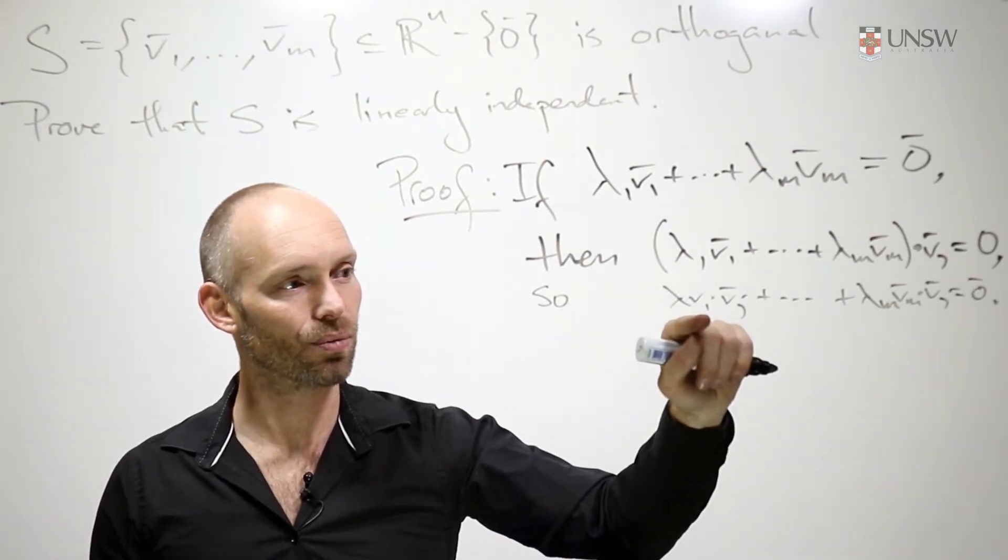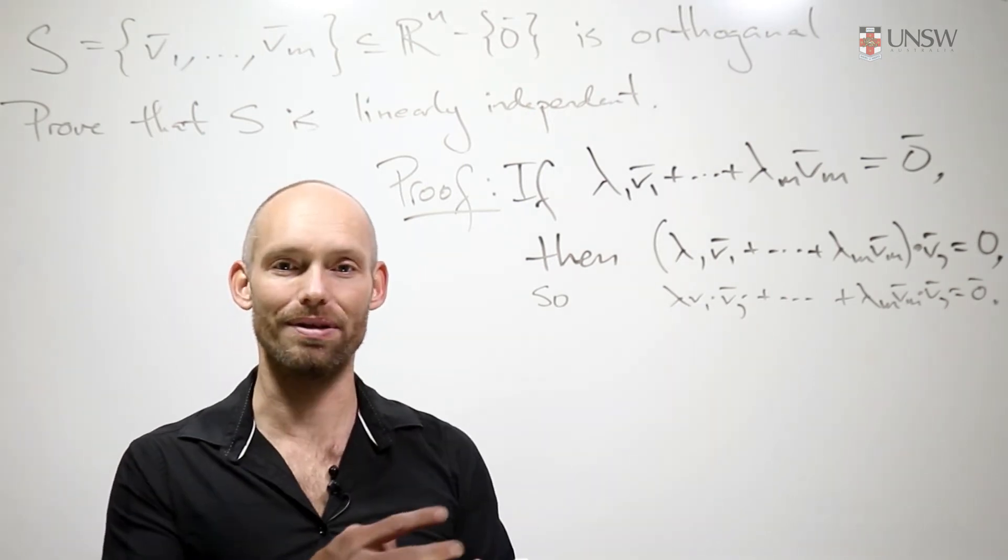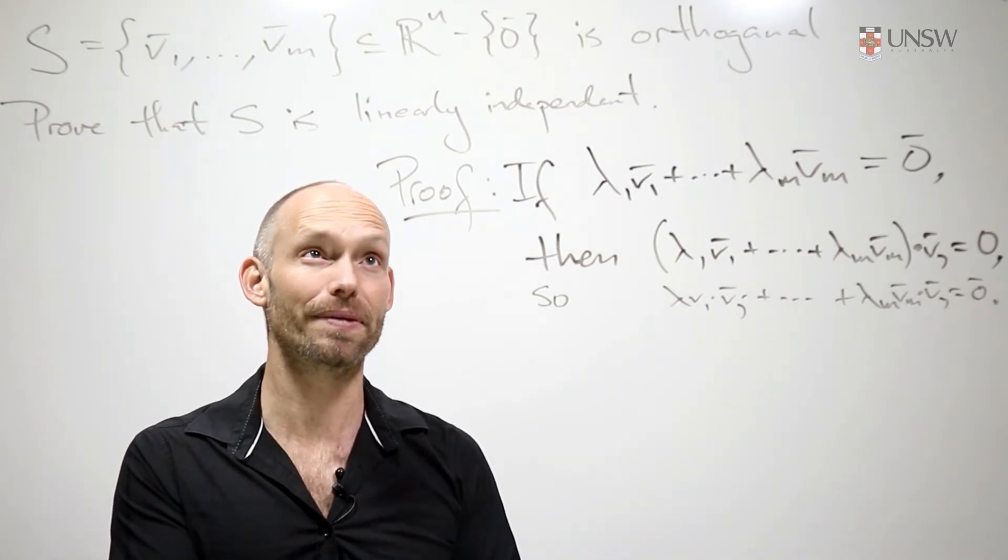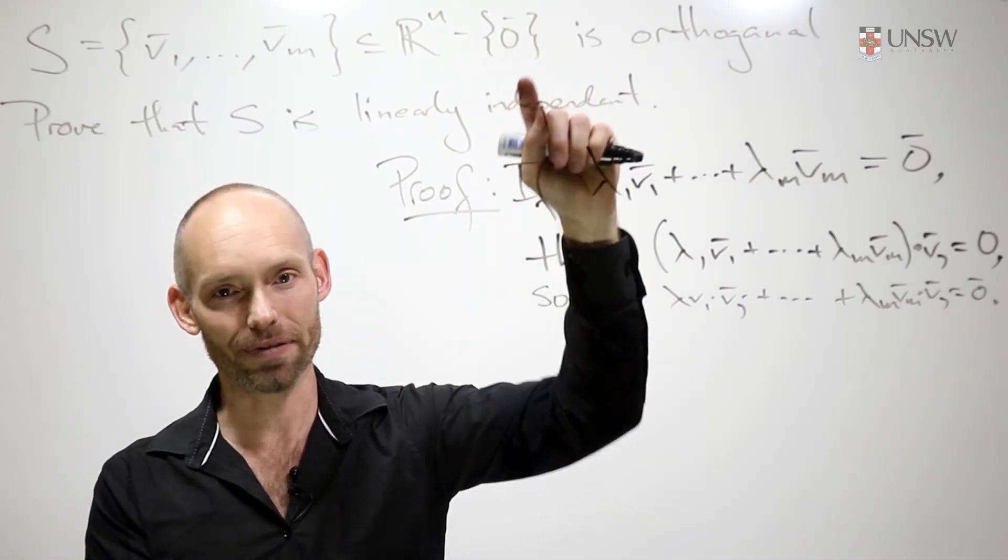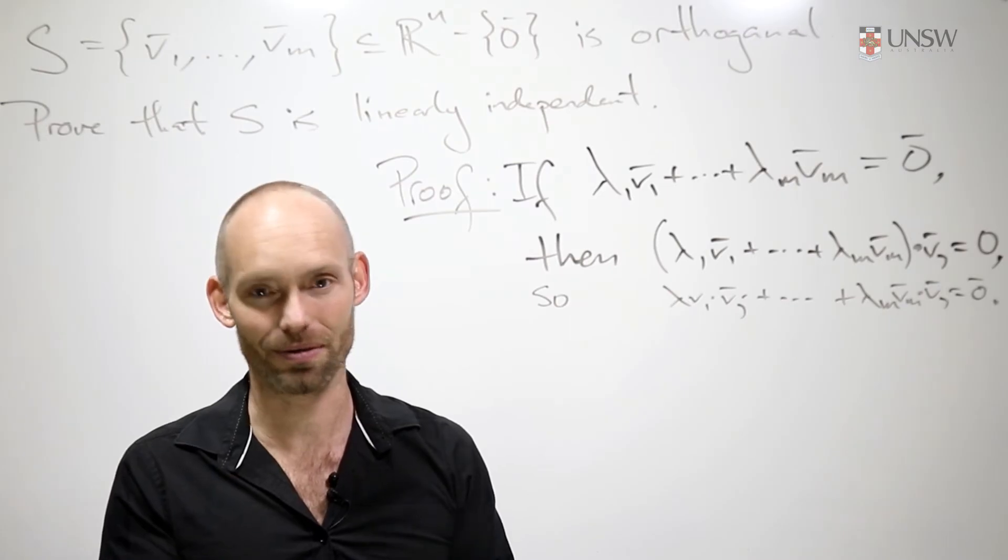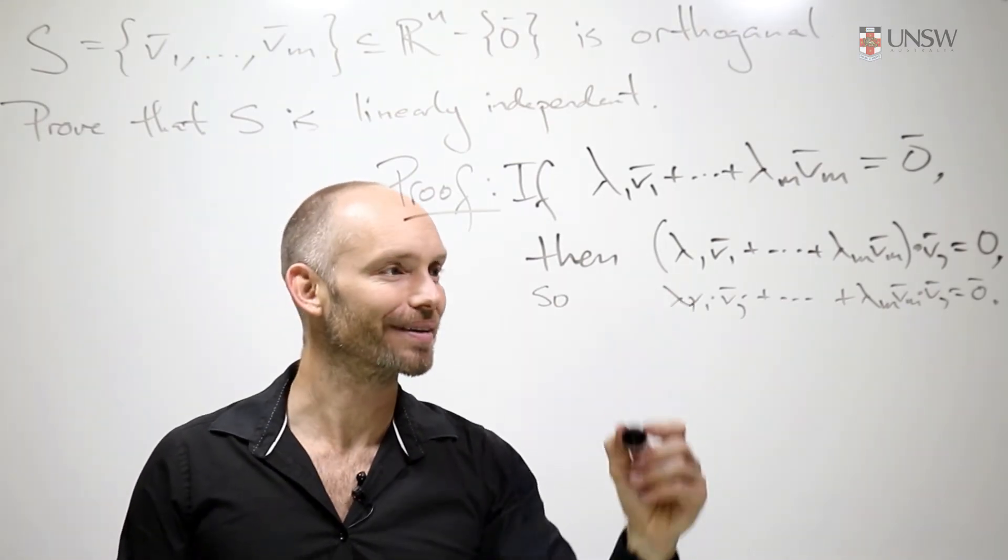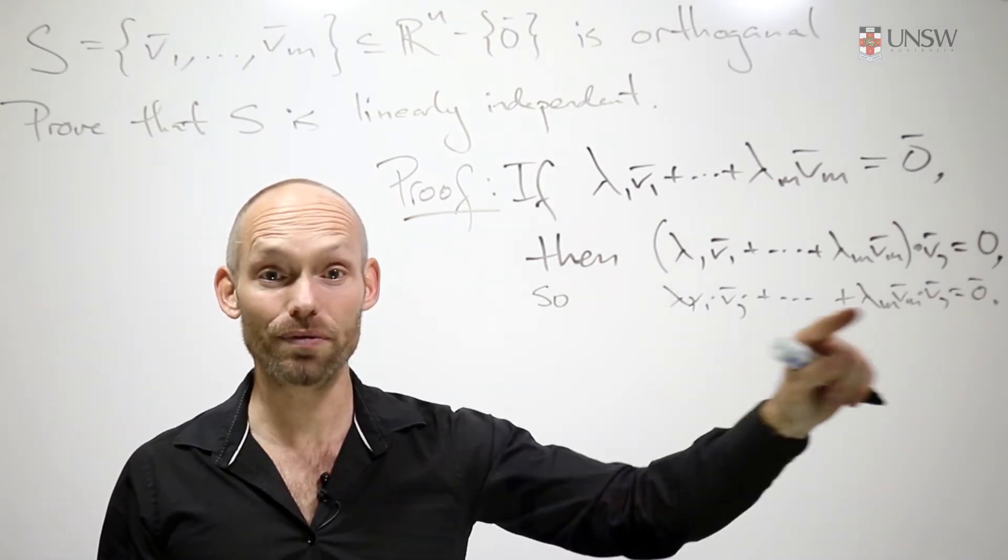If j is equal to 1, for instance, then we have v1 dotted with itself, that gives the length of v1 squared. And since we're not dealing with any zero vector, then that's a positive value, not a zero value. And in fact, that's true for any of the terms here.